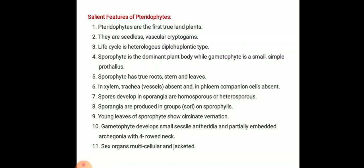Pteridophytes produce spores which develop in sporangia, which are homosporous or heterosporous in nature. Sporangia are produced in groups; this structure is known as sori, and these sori are produced on the young leaves of the sporophyte. The young leaves of the sporophytes show circinate vernation. The gametophyte develops small antheridia and partially embedded archegonia with a four-rowed neck; the sex organs are multicellular and jacketed.